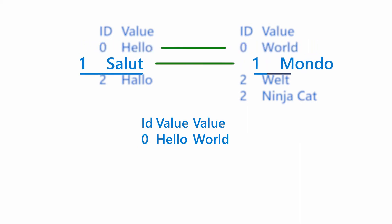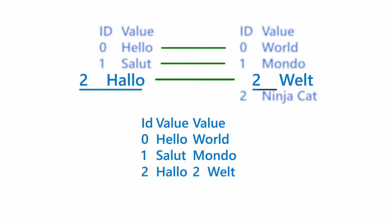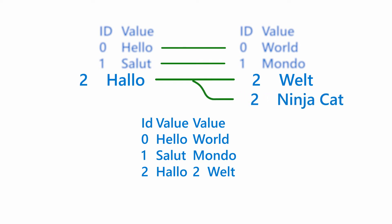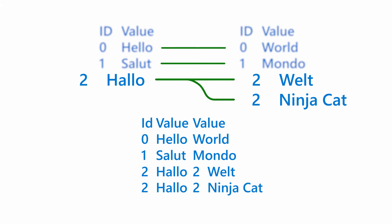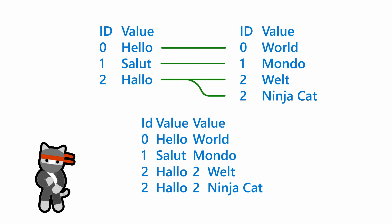This repeats for each row in the left table. One at a time, we match rows in the left table to rows in the right table by using the key value, or ID in this case. It's common for a key from the left table to match more than one row in the right table. When that happens, the row in the first table is duplicated and paired with each matching row in the right table. That's all there is to it. Of course, there are different types of joins that can make things a bit more complicated to understand, but now you understand the fundamental idea.